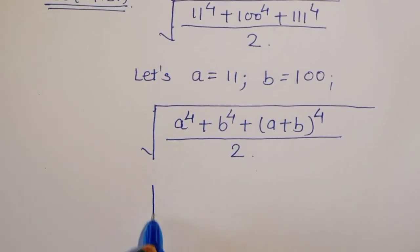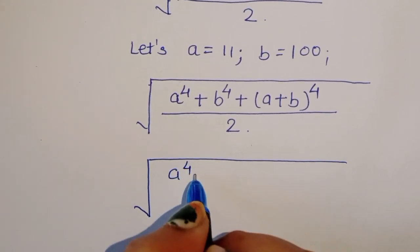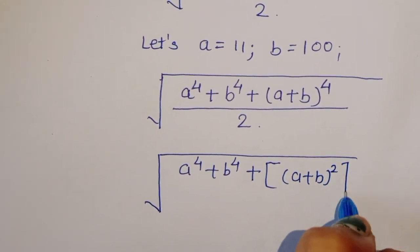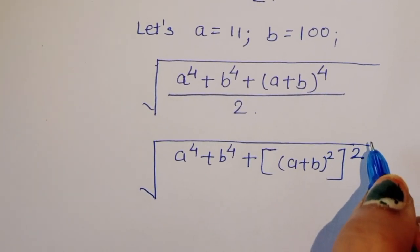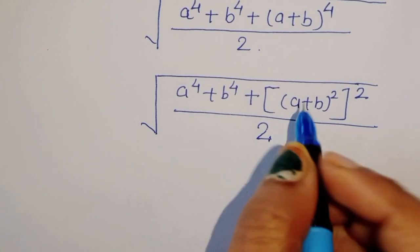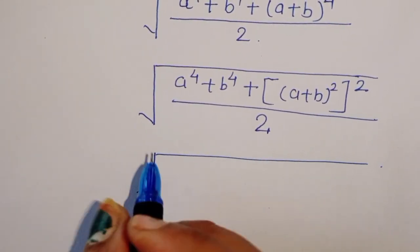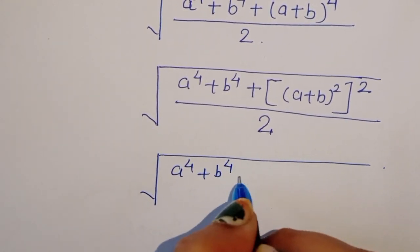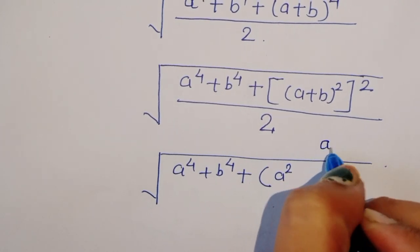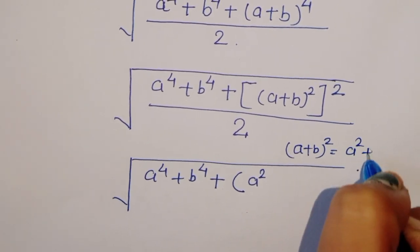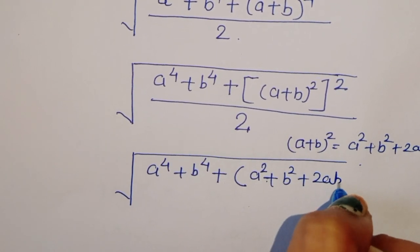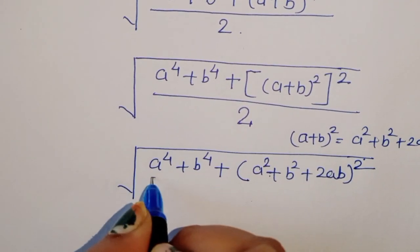We can write this as A power 4 plus B power 4 plus (A plus B) squared, raised to power 2, divided by 2 — because 2 times 2 is 4, divided by 2. Now expanding (A plus B) squared using the formula: A squared plus B squared plus 2AB.